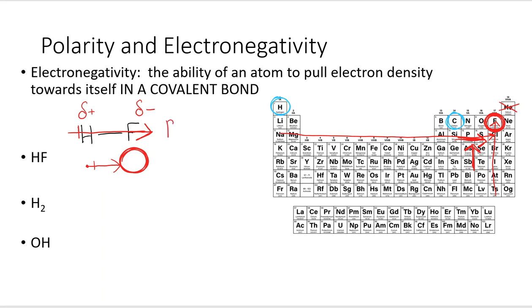This is called a polar covalent bond — polar because the electrons are shared unequally, covalent because electrons are still shared, and a bond because they're stuck together.